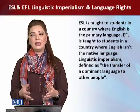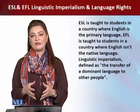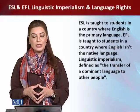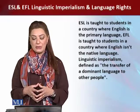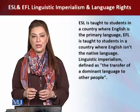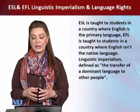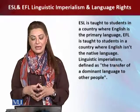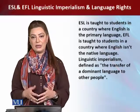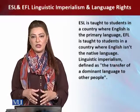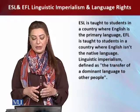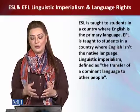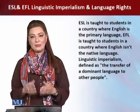Now we are talking about where these different types are taught and what factors lead to linguistic imperialism. English as a second language is taught to students in a country where English is the primary or dominant language. English as a foreign language is taught in a country where English is not the native language, so it is used for functional purposes — functions which have to be carried out globally.